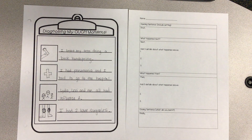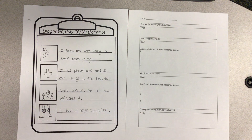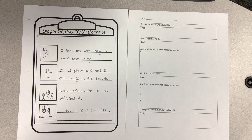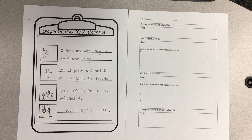We are ready to go from brainstorming into our next part of our ouch writing, which will be making our rough draft. The first thing we need to do is we are going to choose one major ouch story to tell in a big paragraph. We brainstormed four ideas, but now you're going to narrow it down. Which one do you think would be the best story for you to write out?